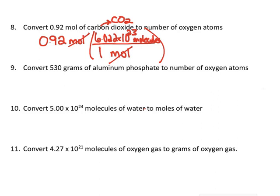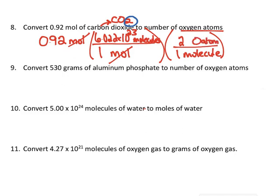Now I'm in molecules of carbon dioxide. But I don't want the number of molecules — I want the number of oxygen atoms. When asked about a specific atom in a molecule, I can use the subscript as a conversion factor. For every one molecule of CO₂, I have two oxygen atoms. Just be careful that when you write O atoms it doesn't look like 20 atoms. In my calculator I'm doing 0.92 times 6.022 times 10 to the 23rd times 2, and I get 1.1 times 10 to the 24th oxygen atoms. Molecules and moles cancel out, leaving me with oxygen atoms.